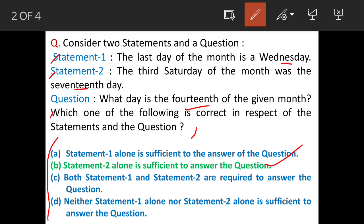So we will understand the question. Last day of the month - now here the month is given but the particular month is not given. And so we really don't know whether it is 30 or 31 days. But the last day of the month was Wednesday.